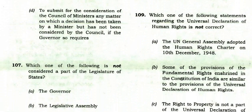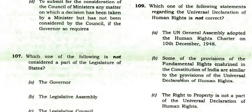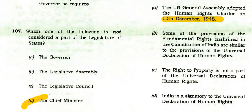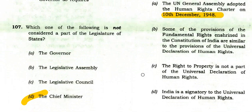Which statement regarding the Universal Declaration of Human Rights is not correct? The UN General Assembly adopted the Human Rights Charter on 10 December 1948 — true. Some fundamental rights in India's Constitution are similar to the UDHR — true. The right to property is not a part of the UDHR — actually, the right to property IS part of the UDHR, so this statement is not correct.